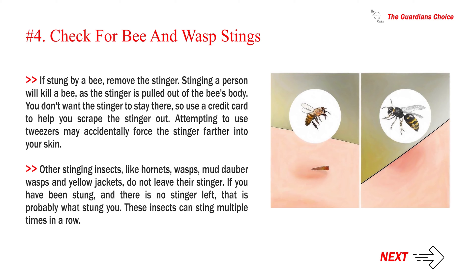Other stinging insects, like hornets, wasps, mud dauber wasps and yellow jackets, do not leave their stinger. If you have been stung, and there is no stinger left, that is probably what stung you. These insects can sting multiple times in a row.